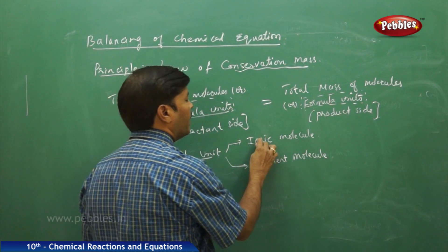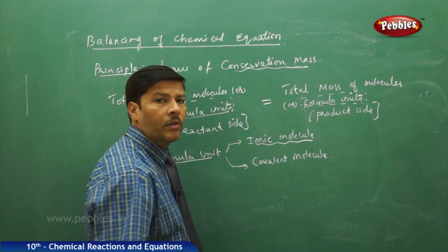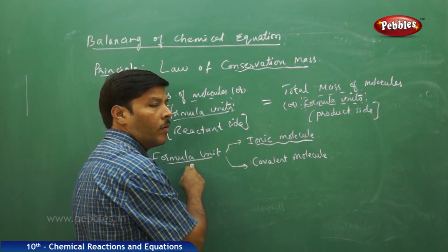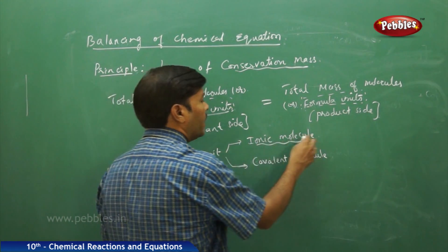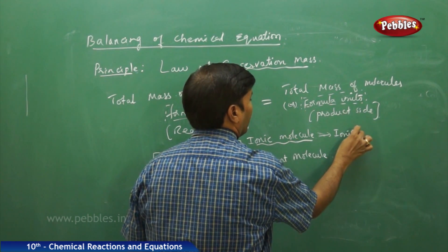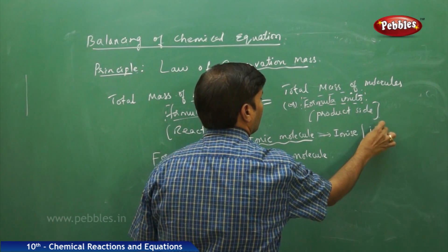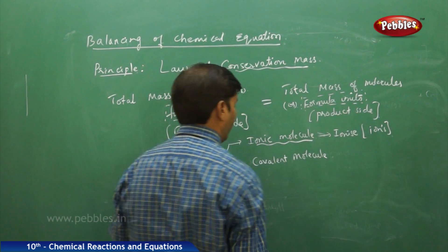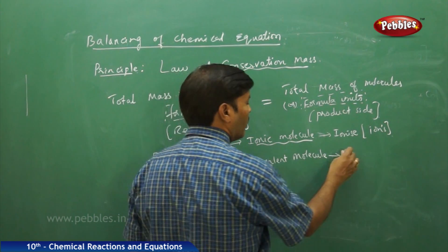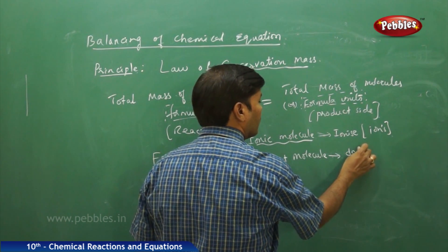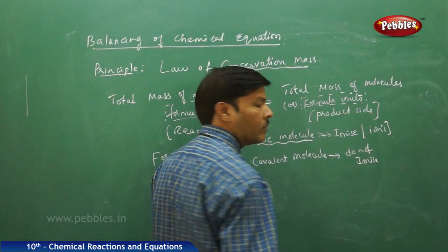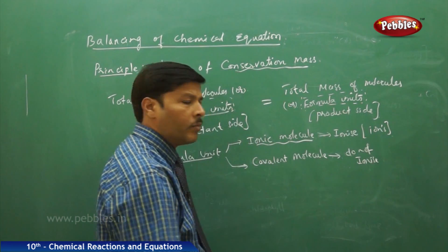If you go for ionic molecules, all ionic molecules in the form of formula units — these ionic molecules ionize to give ions. If you go for covalent molecules, they do not ionize, so ions are not formed.